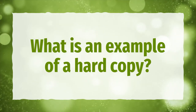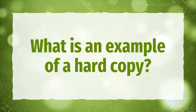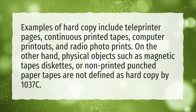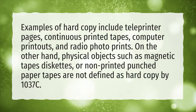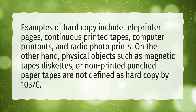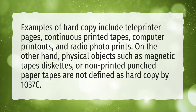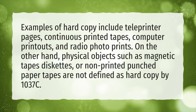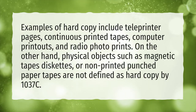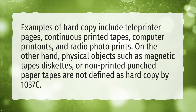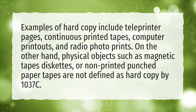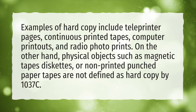What is an example of a hard copy? Examples of hard copy include teleprinter pages, continuous printed tapes, computer printouts, and radio photo prints. On the other hand, physical objects such as magnetic tapes, diskettes, or non-printed punched paper tapes are not defined as hard copy by 1037C.